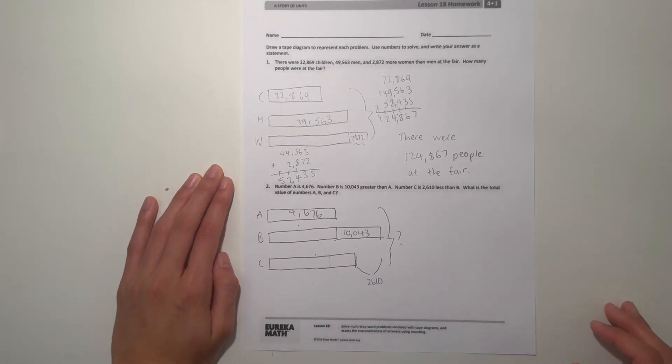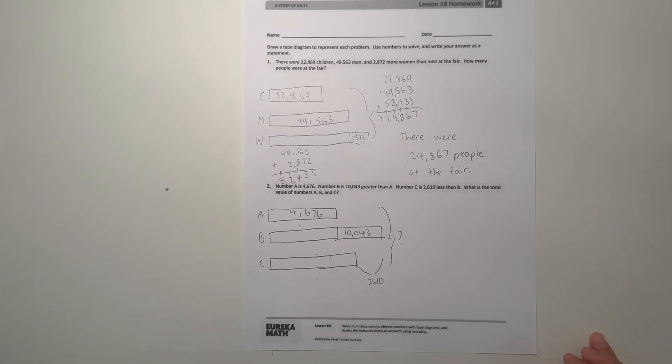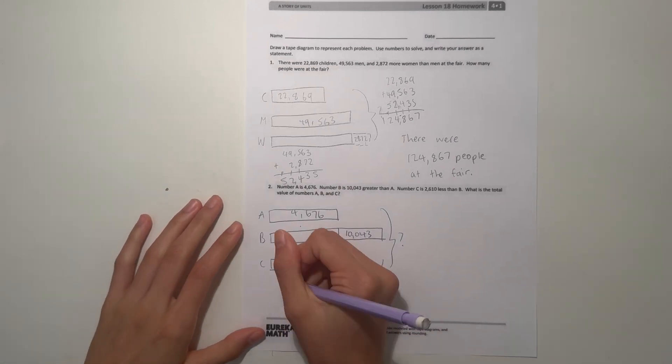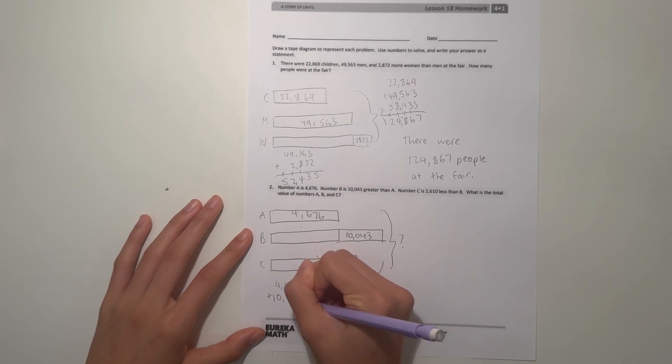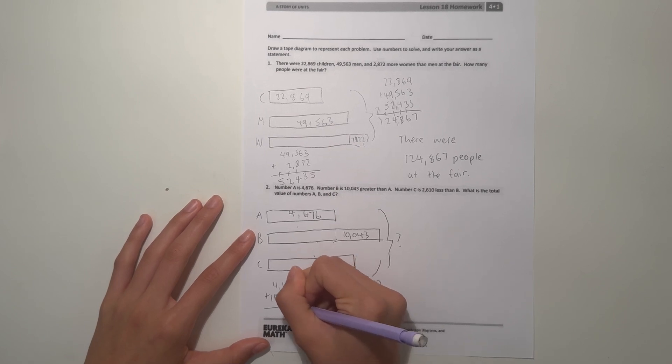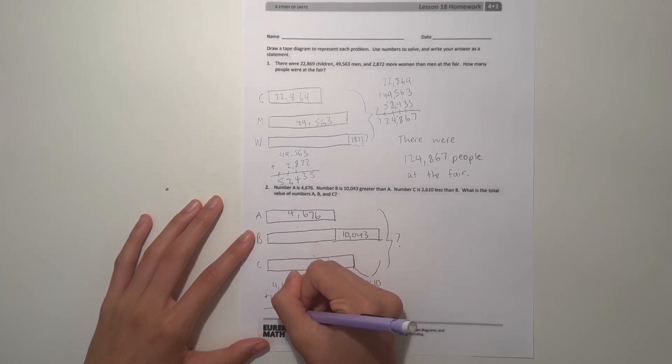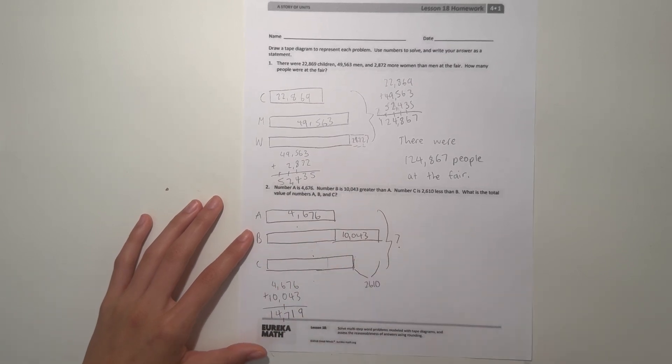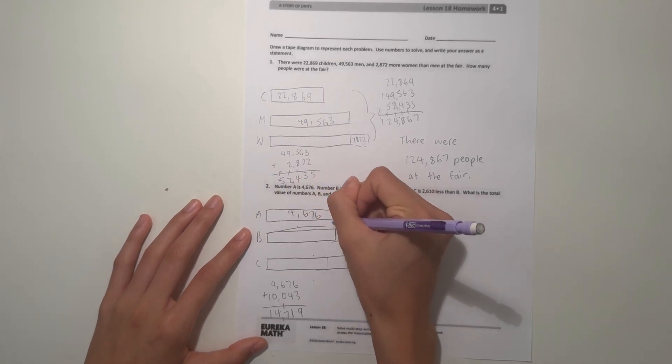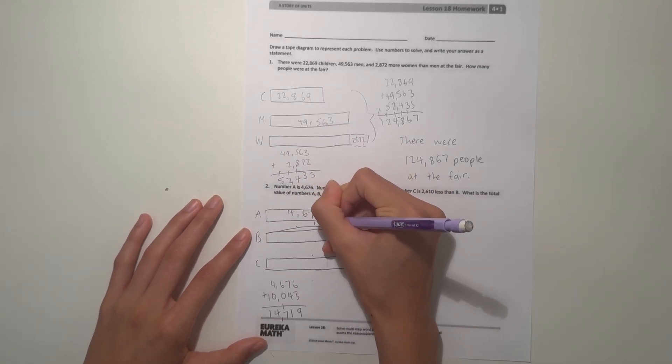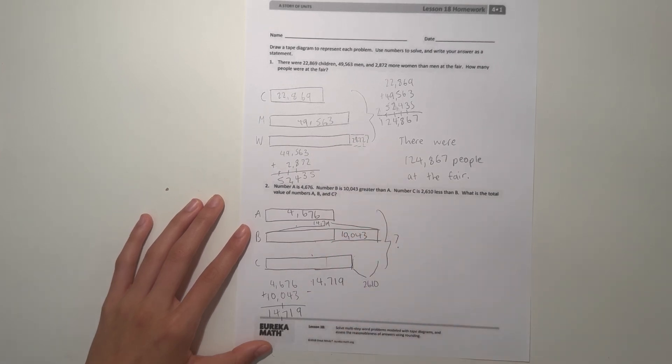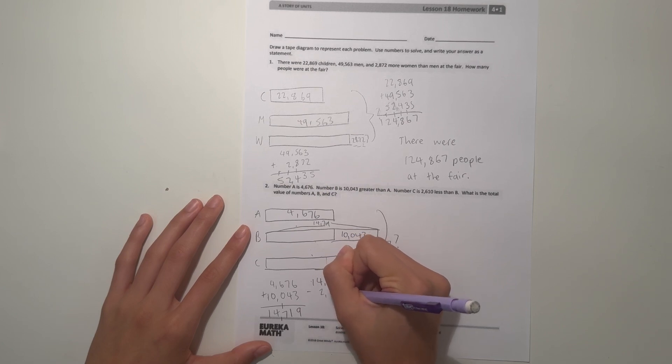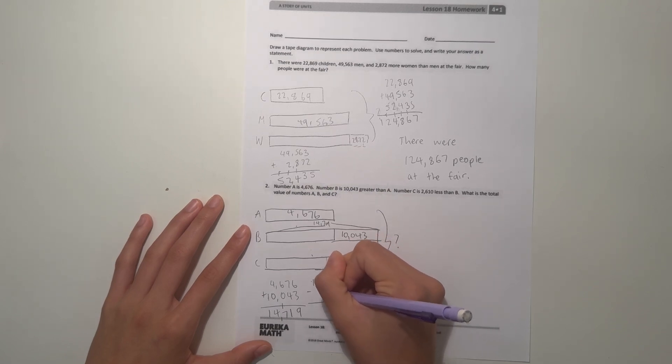First let's find what B is because we can't find C without finding B first. So 4,676 plus 10,043: 6 plus 3 is 9, 7 plus 4 is 11, 6 plus 1 is 7, 4 plus 0 is 4, and the 1 just stays 1. So B is 14,719. Now we have to find C, so we do 14,719 minus 2,610. 9 minus 0 is 9, 1 minus 1 is 0, 7 minus 6 is 1, 4 minus 2 is 2, and 1 stays 1. So C is 12,109.